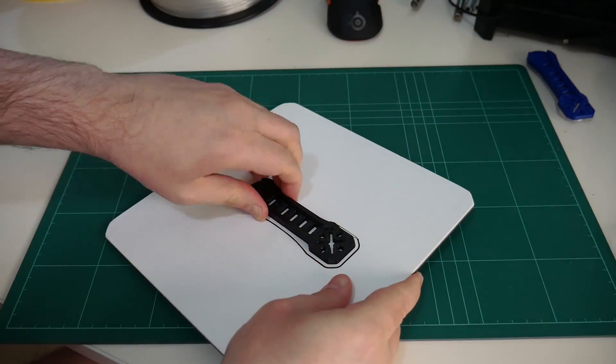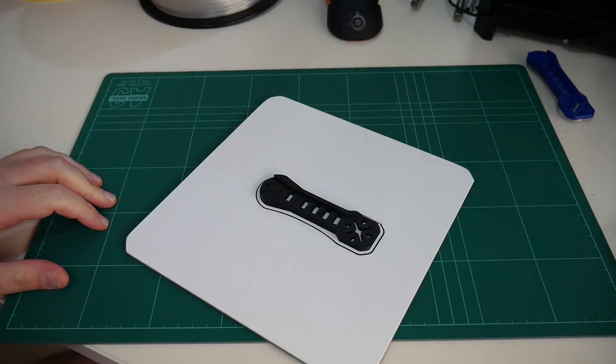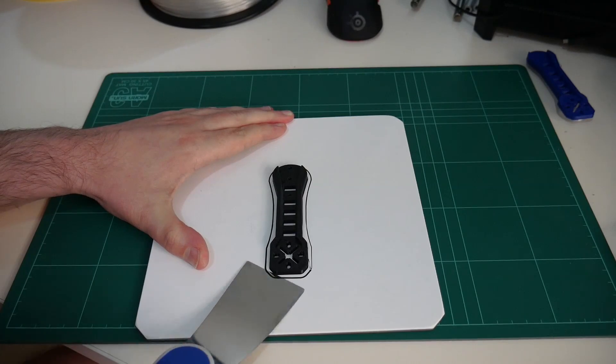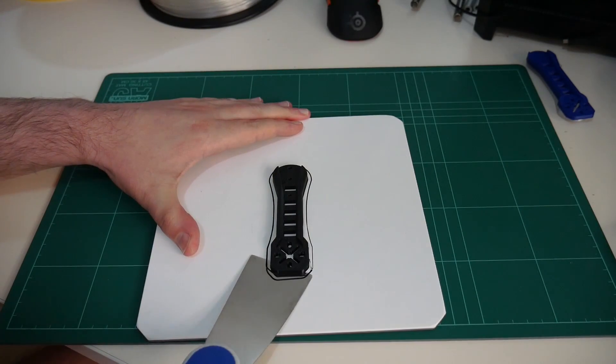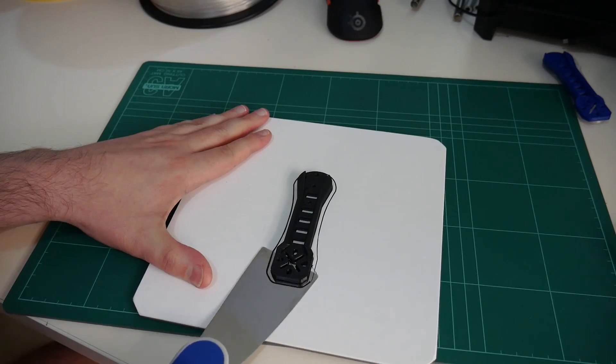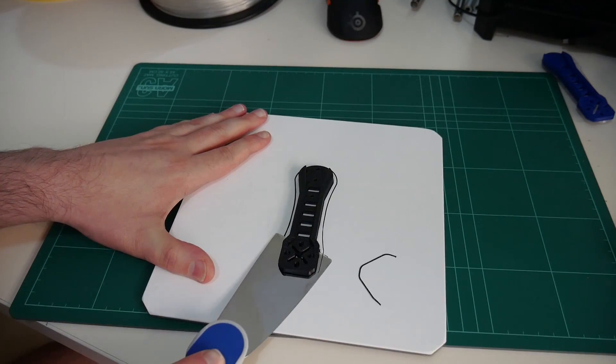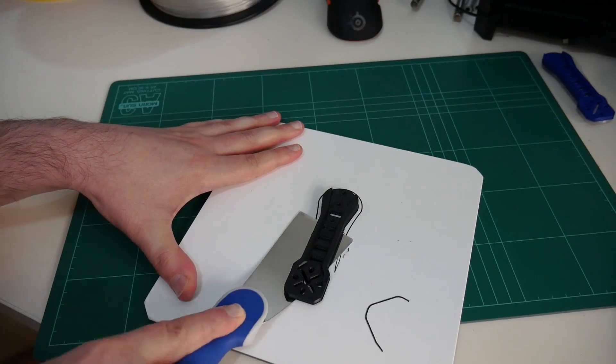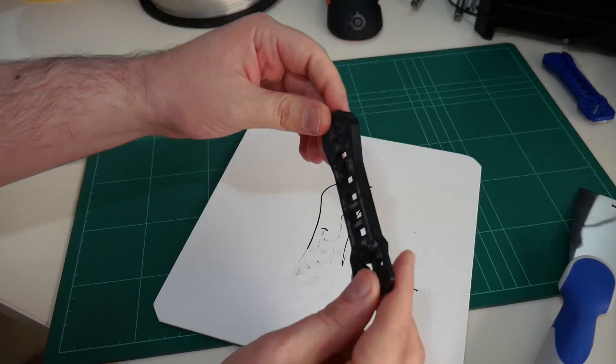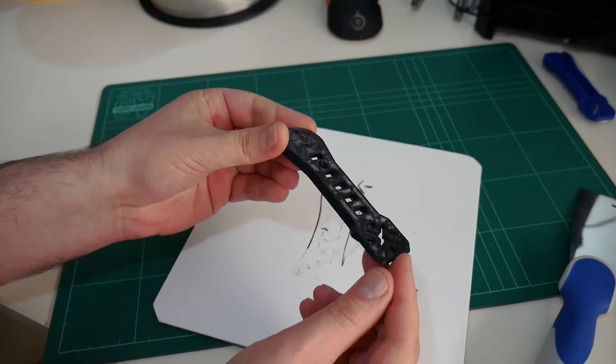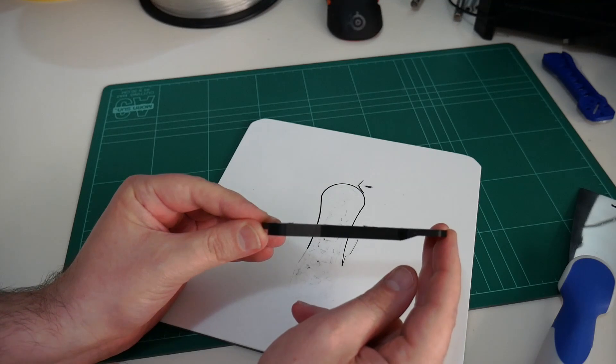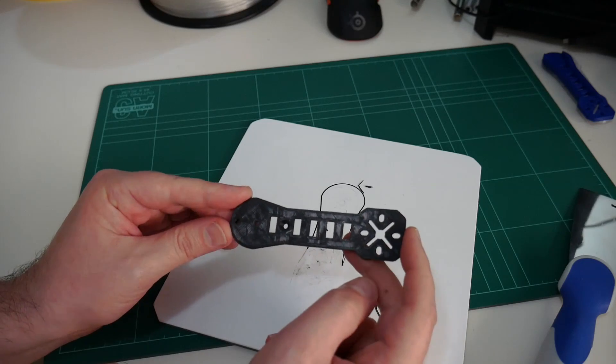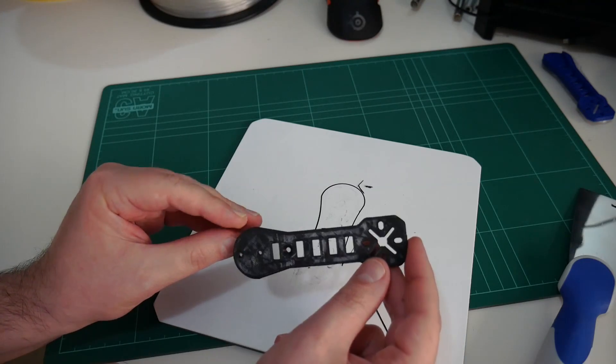So, it's not going to come off as easily as the PLA, but I have my trusty scraper here, so let's see how easy it is to pull off. It's stuck on pretty well, but it's coming off. OK, there it is. Fantastic. And that is perfectly flat. ABS is notorious for warping, and to get a flat part like this, this part is over 10cm in length, that is fantastic.